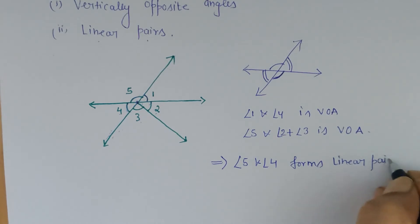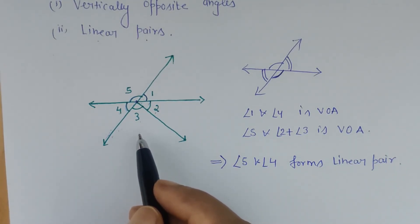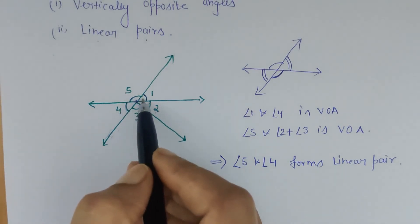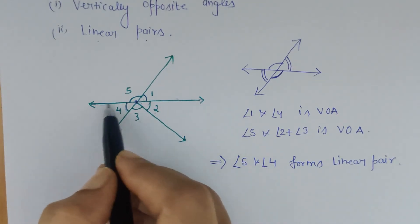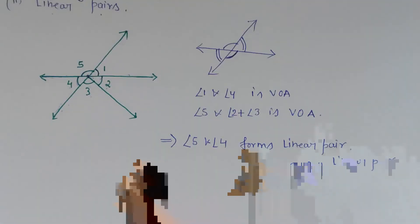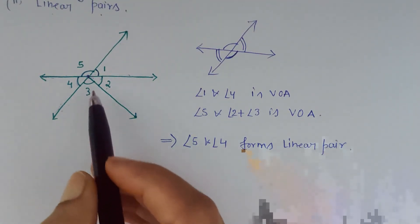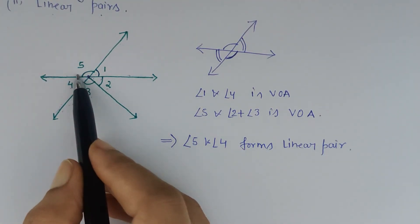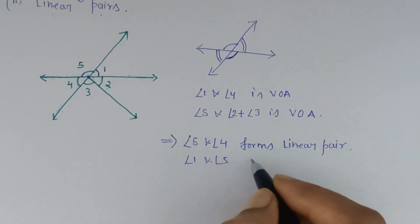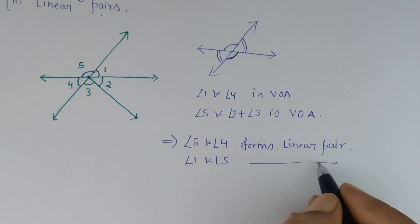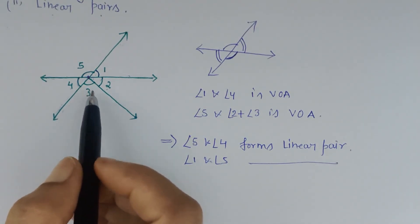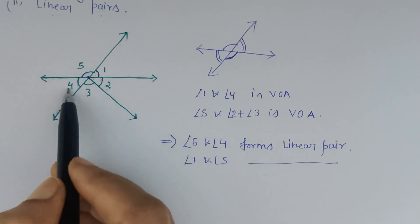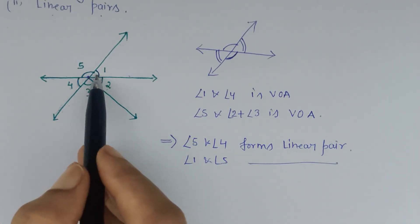Similarly, which are the other two angles that form a linear pair? It is a straight line with a common vertex and two non-common arms. So it is very clear that angle 1 and angle 5 form a linear pair, and angle 4 and angle 5 also form a linear pair.